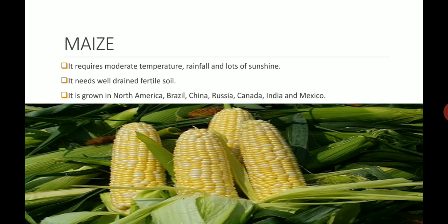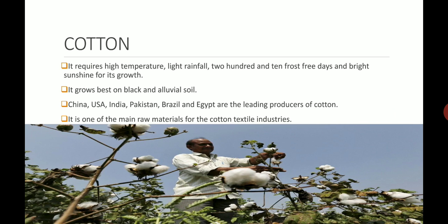Let's talk about cotton. It requires very high temperature, light rainfall, more than 210 frost-free days and bright sunshine for its growth. It grows well on black and alluvial soil. China, USA, India, Pakistan, Brazil and Egypt are the leading producers of cotton. It is one of the main raw materials for the cotton textile industry. On the bottom of your screen you can see a farmer harvesting cotton — the white material on those plants is the cotton.